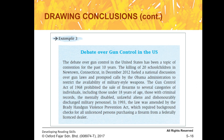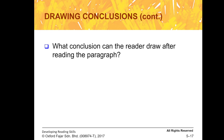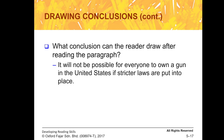Using the same gun control passage, what conclusion can the reader draw? It will not be possible for everyone to own a gun in the United States if stricter laws are put into place. After reading everything — the amendment of laws and the restrictions on who can buy guns — you can understand that they will not allow just anyone to buy guns.